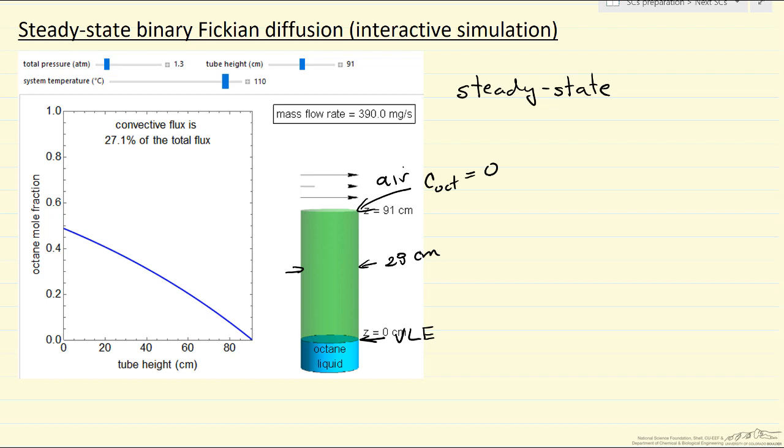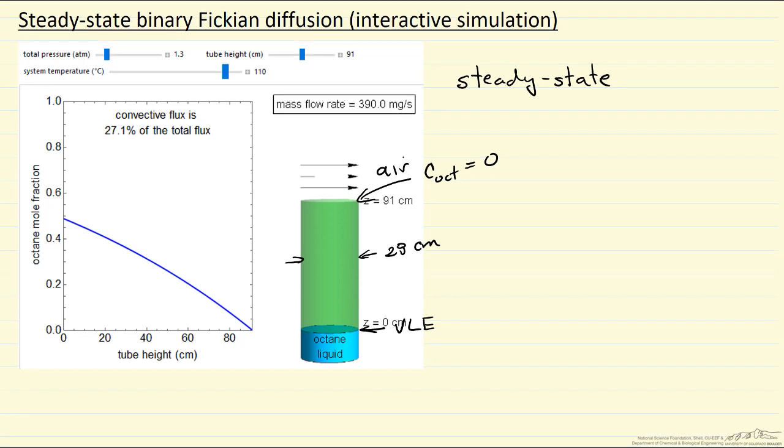We can change the total pressure where most of the pressure, at least at low temperatures, is due to air and here is plotted the mole fraction of octane versus tube height. This changes as we change the system temperature because as we lower the temperature, we're lowering the saturation pressure exponentially.